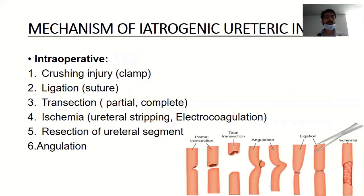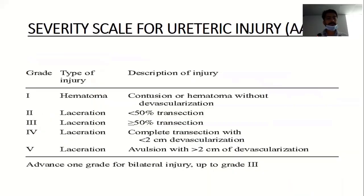Mechanisms of iatrogenic injury include crushing injury, ligation, and partial or complete transection. Ischemia to the ureter by ureteral stripping, electrocoagulation, or resection of a ureteral segment can also lead to angulation.